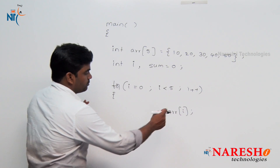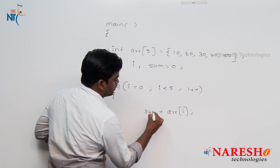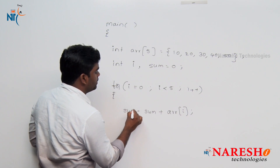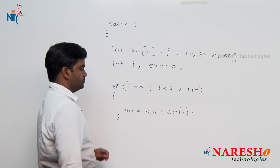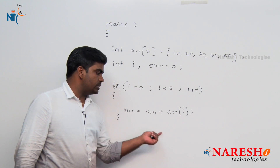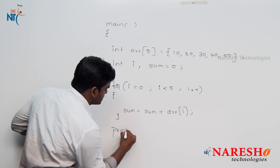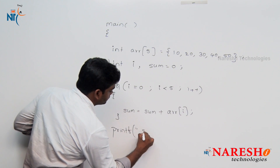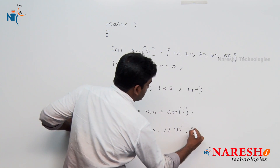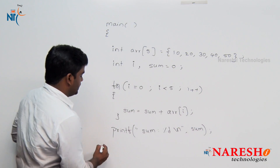Here, arr of i value we are adding to sum, and after adding the result we are collecting into variable sum. 5 times it will repeat — every time the element will be added to sum. Finally, we are printing that sum. printf sum value — it is an integer, so we are printing that sum.